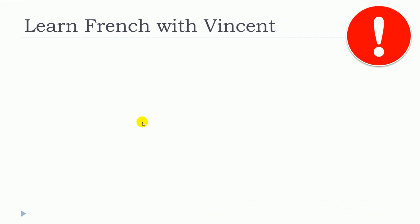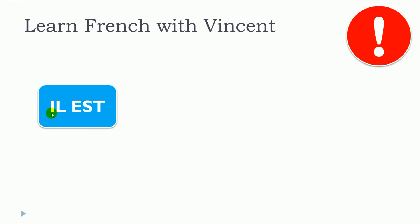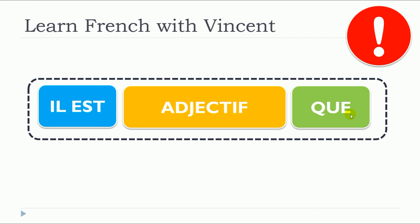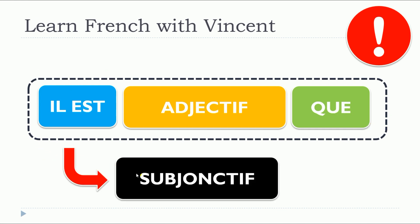The important thing that we need to remember is that we will structure our sentence in such a way. We will start with il est. Remember that in that case, il will stand for it and not for he. Then we will put the adjective, then que, and after all that, we will introduce the subjonctif. So it means that the verbs that will come after this structure will be in the subjonctif.